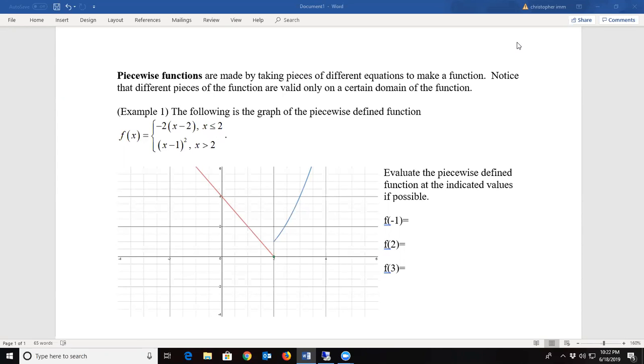Really, we're breaking up the graph into two different pieces. When x is less than or equal to 2, our function is the first: negative 2 times x minus 2.